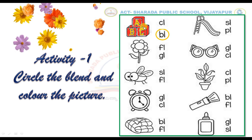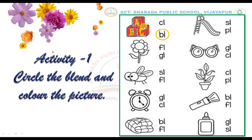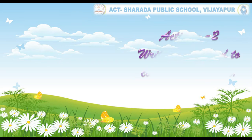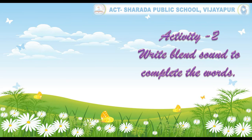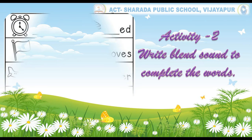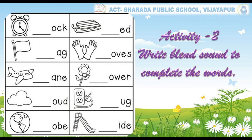Okay children, let us move to our second activity. That is, write blend sound to complete the words. In this activity, kids, you have to identify the picture and write the correct blend sound to complete the words.